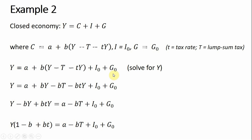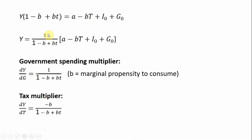Taking B, the marginal propensity to consume, and multiplying it through by what's in parentheses, we get our next step. As before, we're going to want to solve for Y, so anything with a Y term on the right-hand side I'm going to bring over to the left-hand side. Subtracting BY from both sides and adding B times t times Y to both sides — careful with your signs — we factor out Y on the left-hand side, then divide through by what's in parentheses.